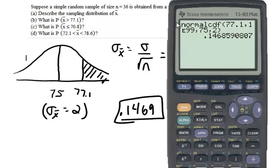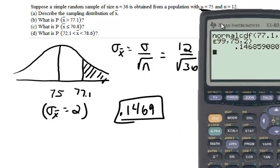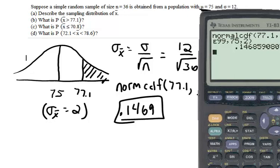I recommend on your paper to write everything down. So you'll actually write down what I put in the calculator. So you write down normalcdf. That way you'll kind of know what you were doing. 77.1, comma, and keep going.